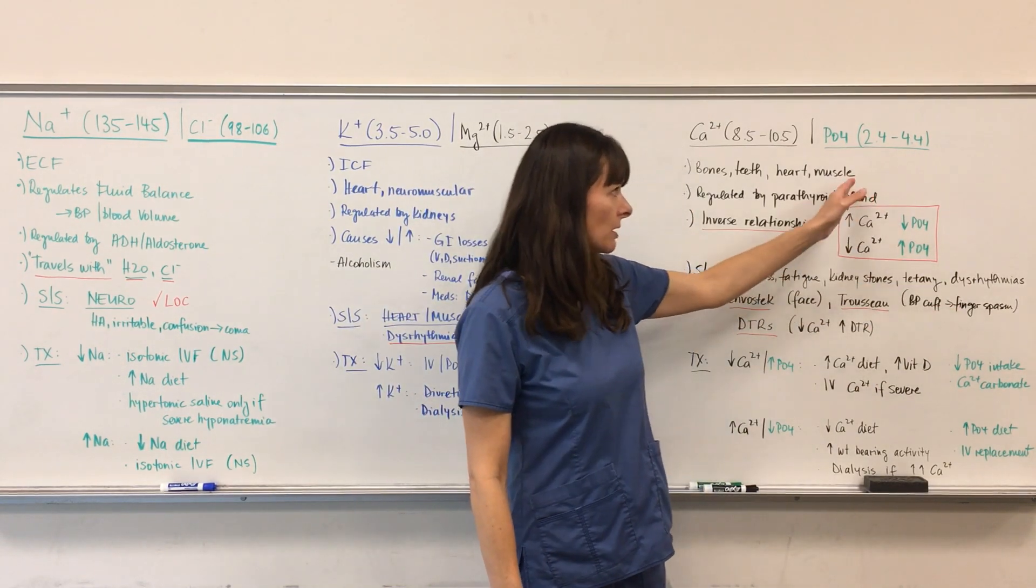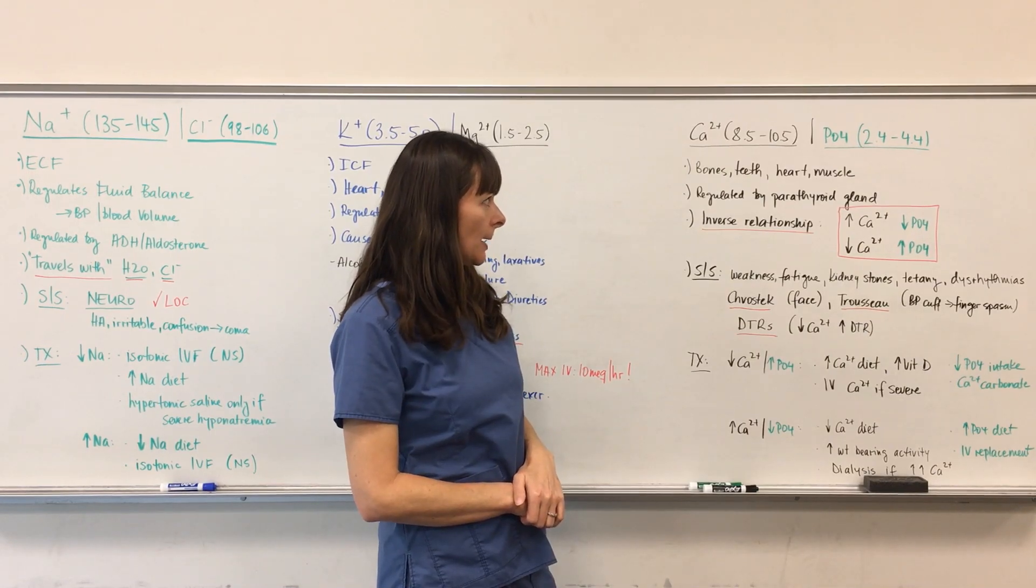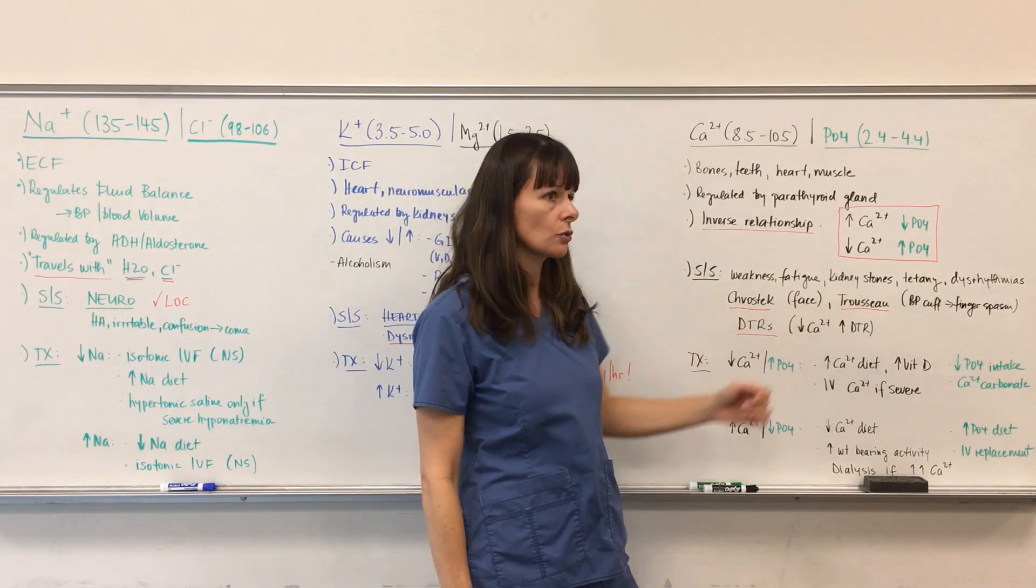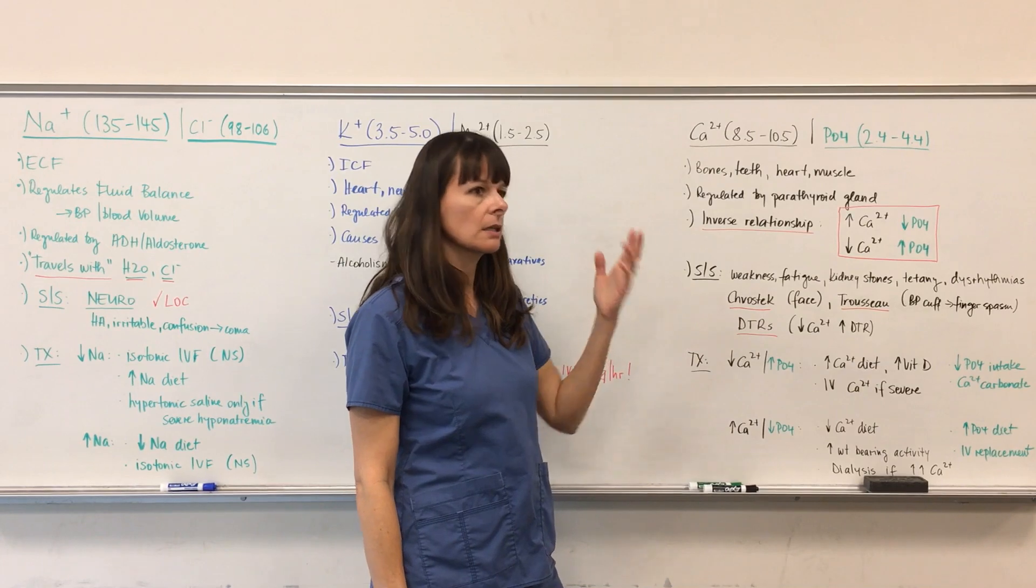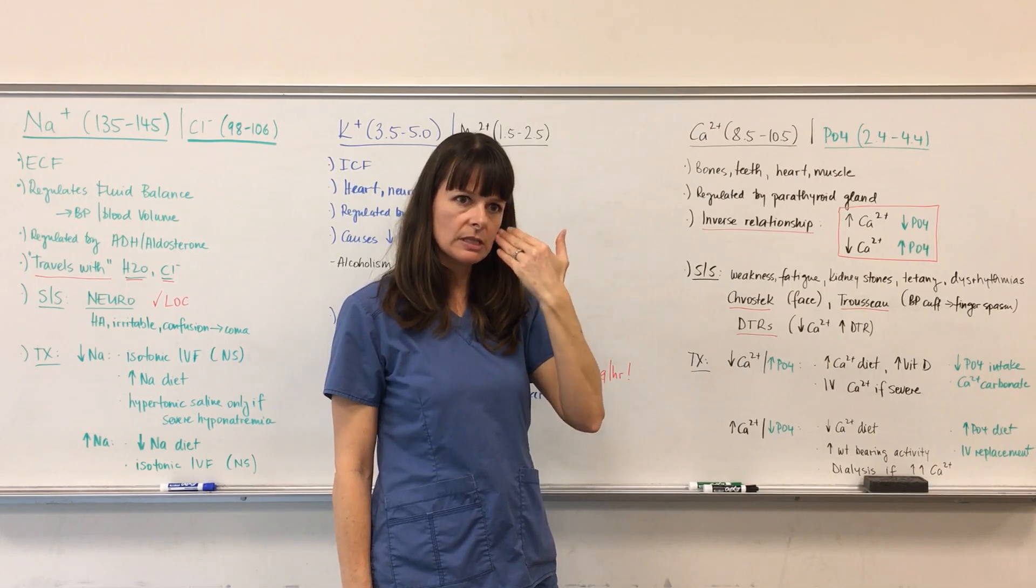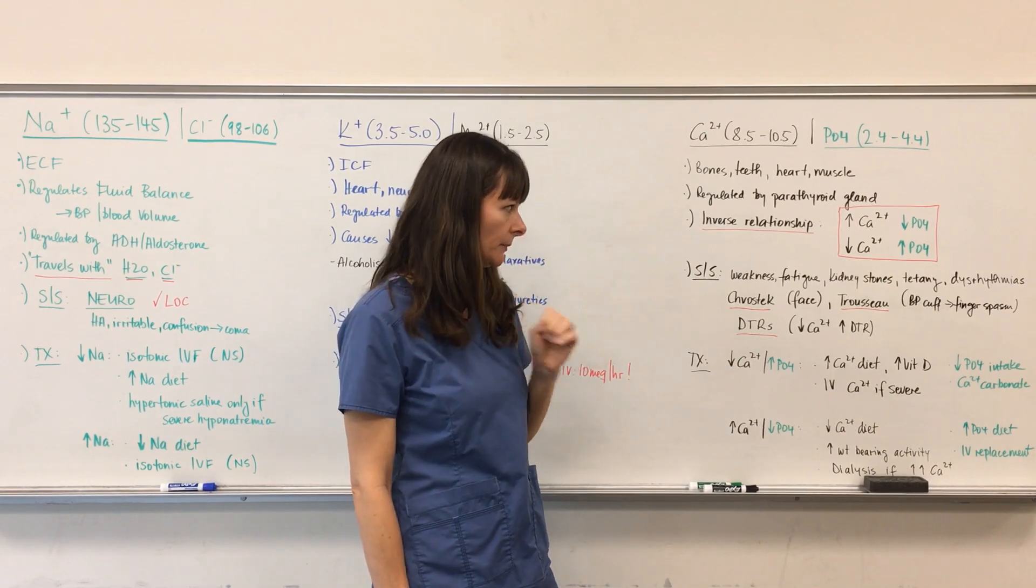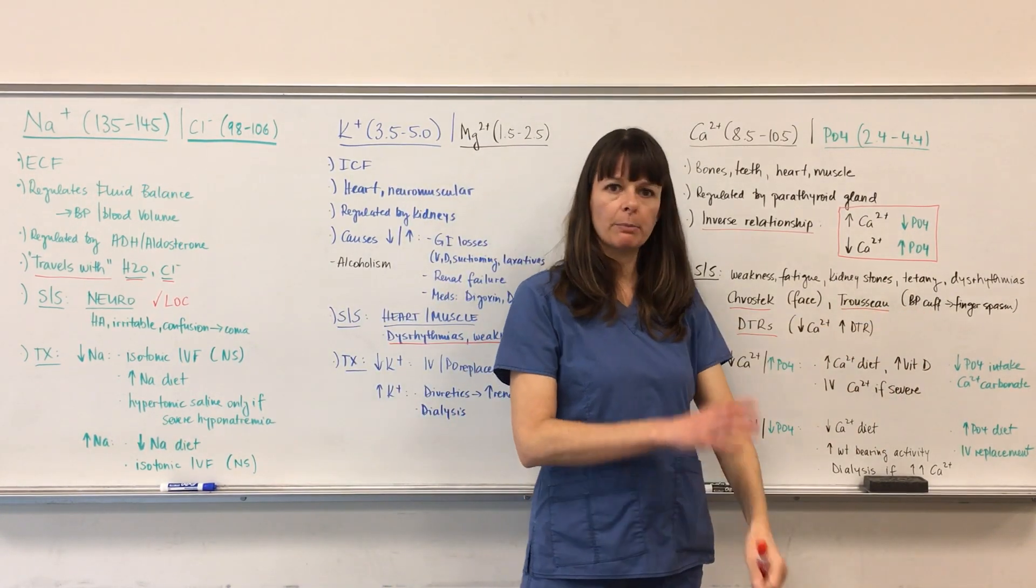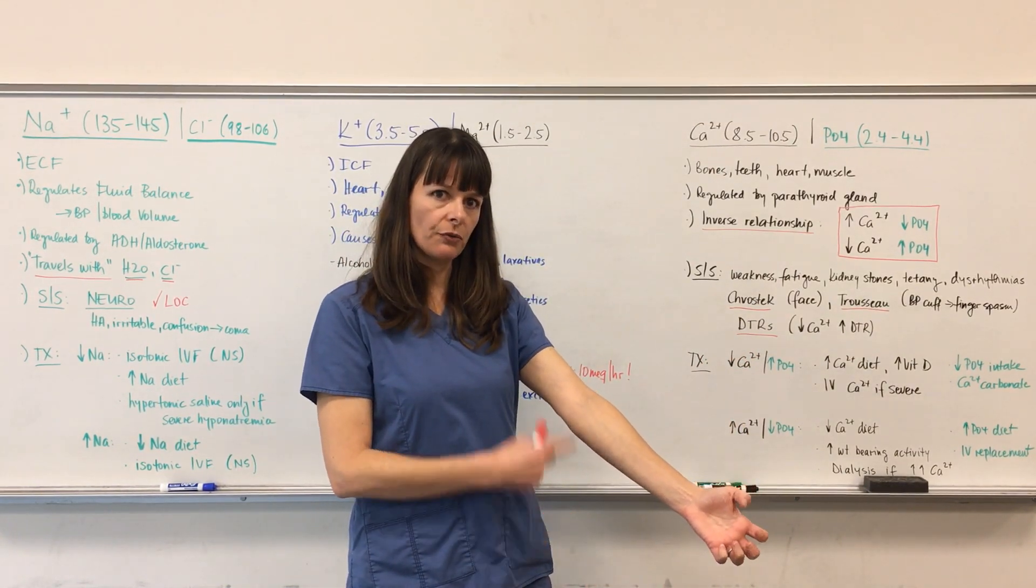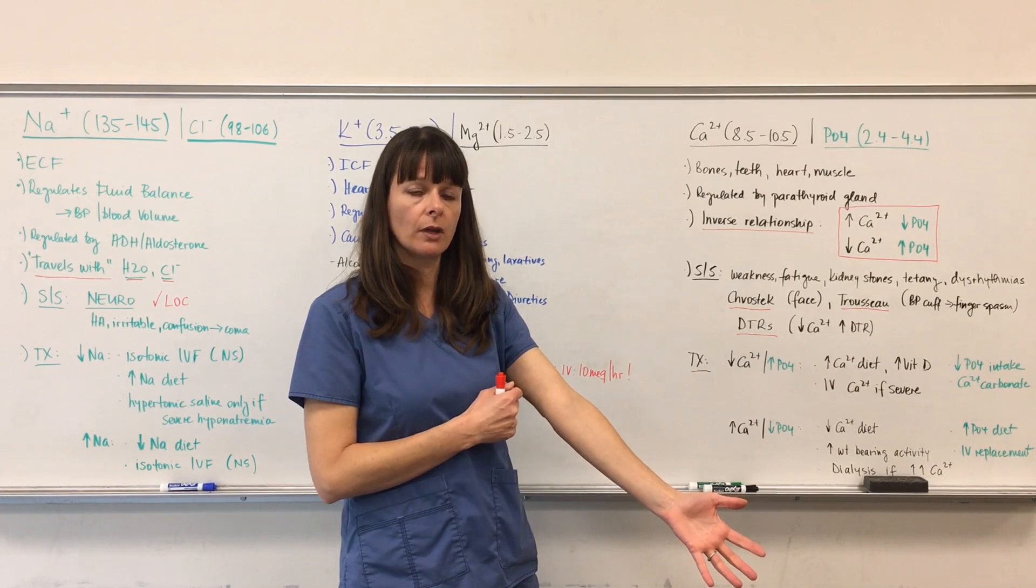With calcium imbalances, these two signs always come into play: Chvostek and Trousseau. When there's an imbalance in calcium and you strike the patient's cheek or side of the face very slightly with the finger, it'll cause some contraction of the facial muscles. Trousseau sign is if you place a blood pressure cuff on the patient and you pump it up, it will cause some spasm of the fingers of the same arm that blood pressure cuff is attached to because of that effect on the muscle.